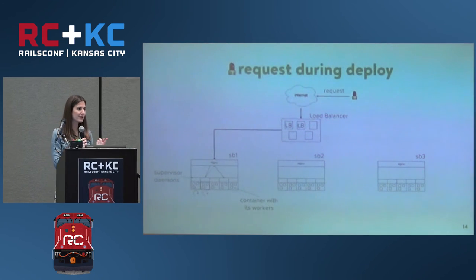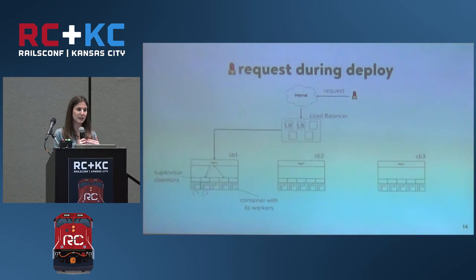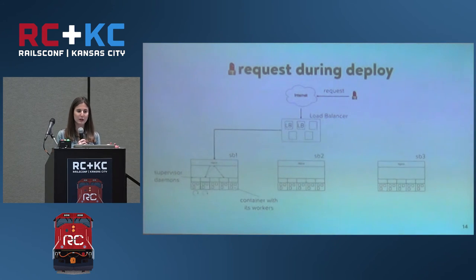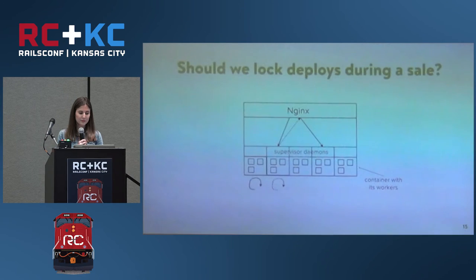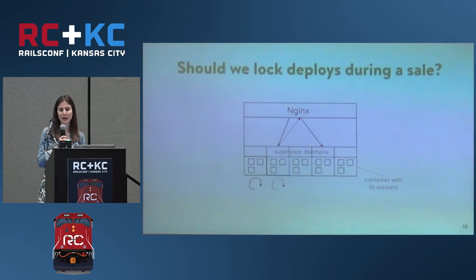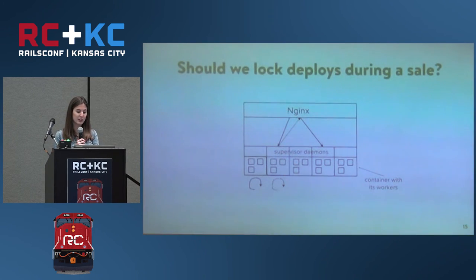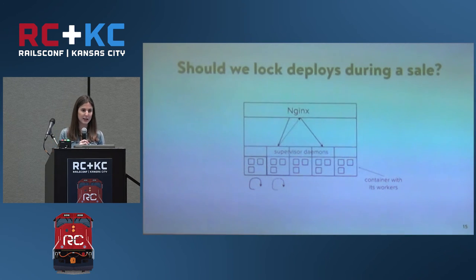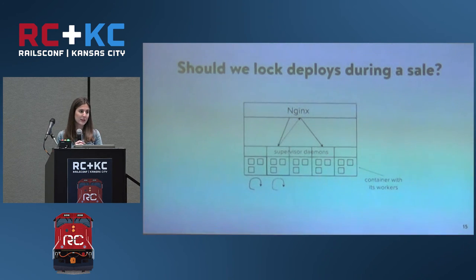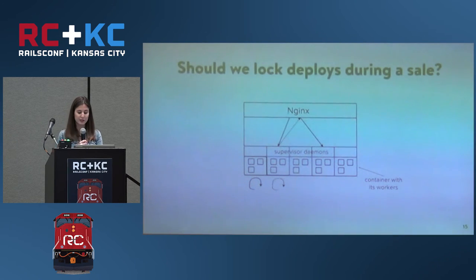Each request only has one retry. If that container says no, it gets one retry to go to another container. This is because if you send a malicious request, at worst you've blown up two containers. Sometimes we wonder: should we lock deploys during a sale? When one of these five containers is switching revisions, we are down 20% in capacity — one out of five. Sometimes we think, if a sale is going to be huge, maybe we should lock deploys so we're at 100% capacity. Most of the time we don't — we continuously deploy throughout the day and let people have their sales, and everything is usually fine.